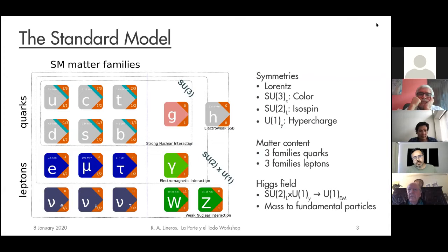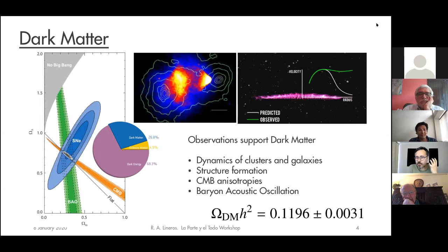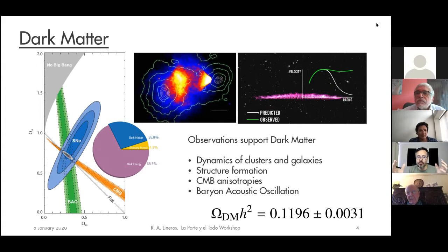As with all models, it doesn't explain everything — gravity is not included. But there are other aspects also not included, such as dark matter. Dark matter is a well-established hypothesis expressed at many scales: galactic, extragalactic, and cosmological. From galaxy dynamics, structure formation, and CMB acoustic oscillations, we know that around 85% of the matter of the universe is in the form of dark matter, which is not in the standard model.